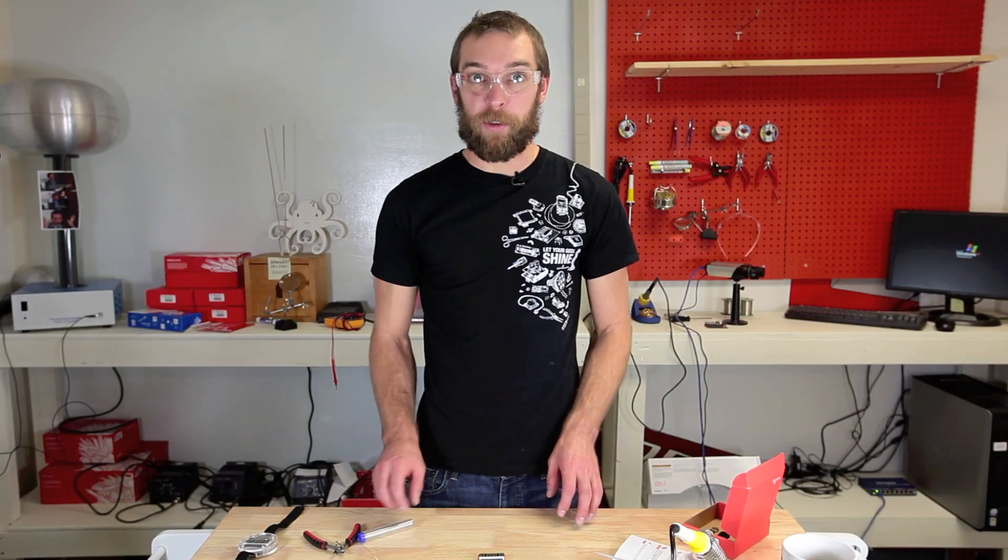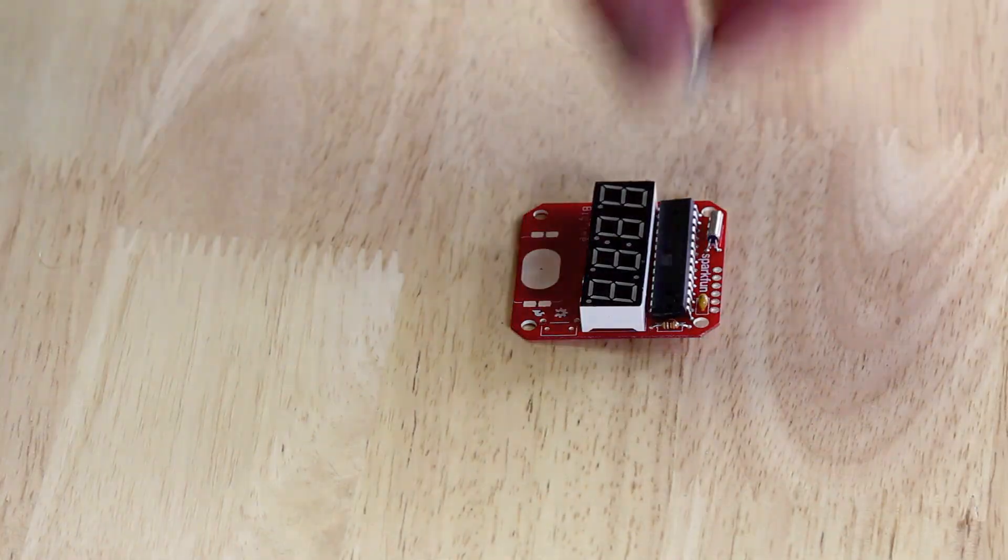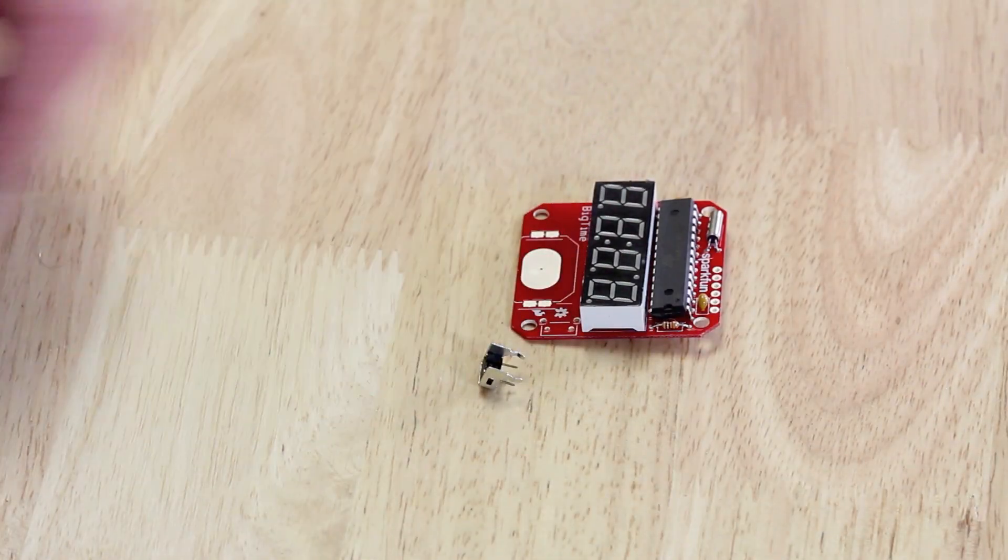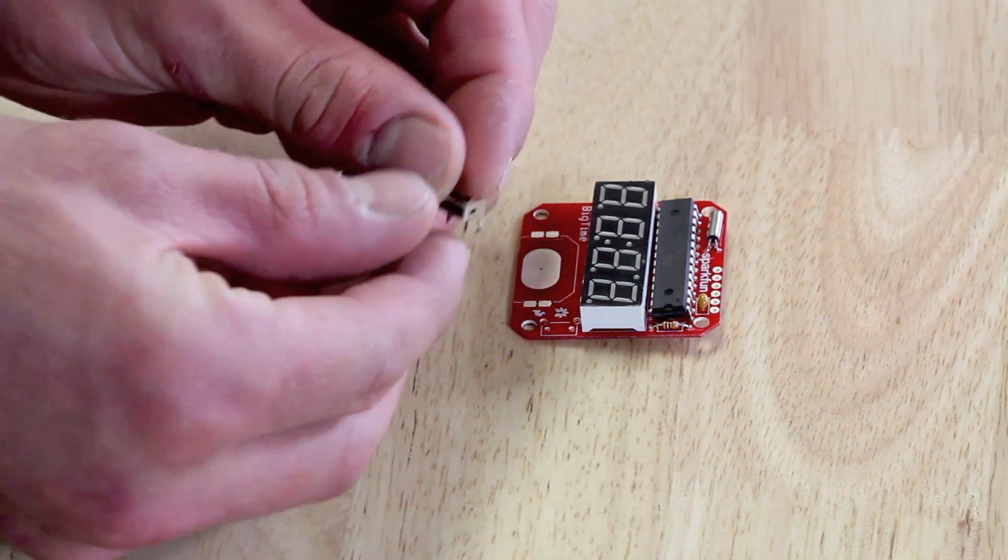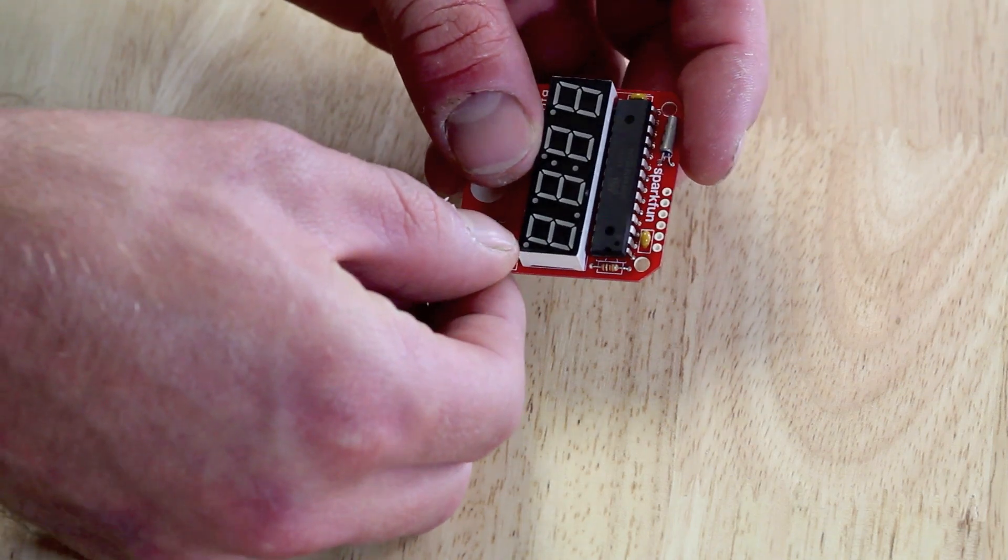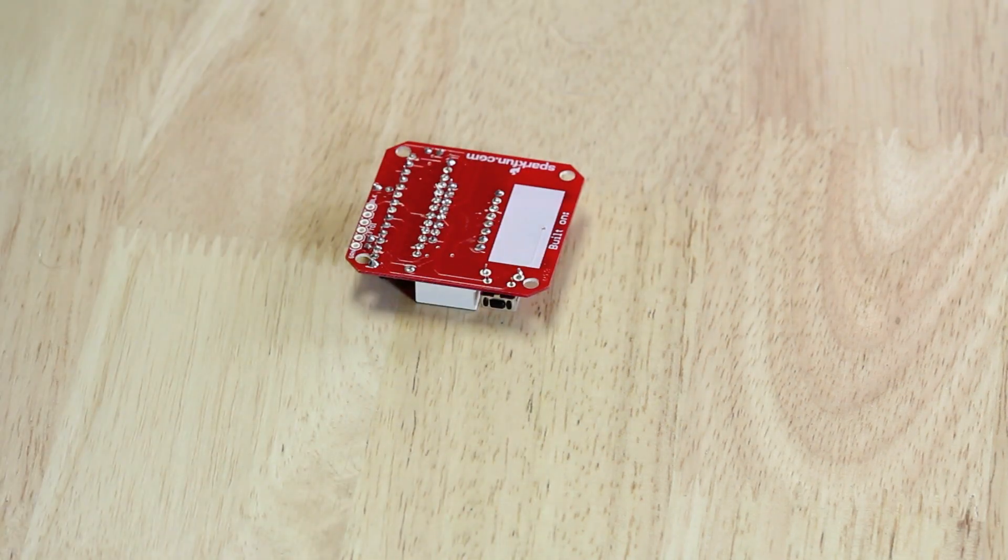The next component we're going to be soldering on is the switch. Now this is the physical on-off switch that you'll be pressing to see what time it is. This little guy here. Now we're going to be mounting them in the bottom right-hand side of the board and we want the little plastic guy facing out so you can actually activate the switch with the rocker. Now we're just going to push them into place here. Let's go ahead and solder him in.